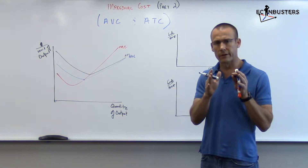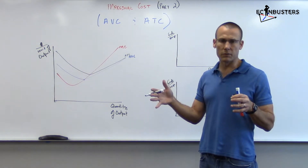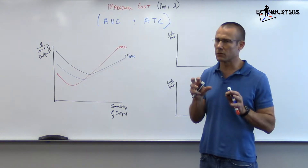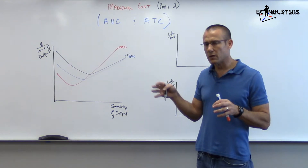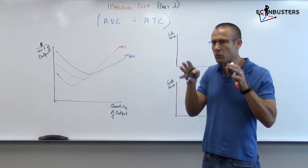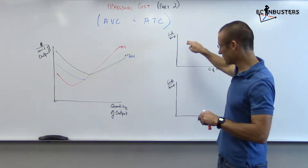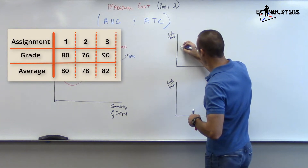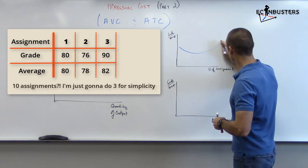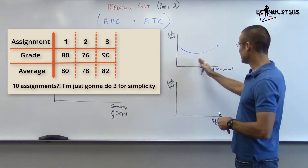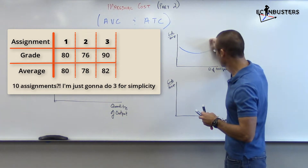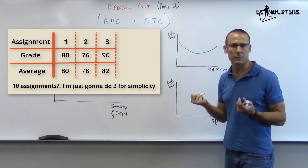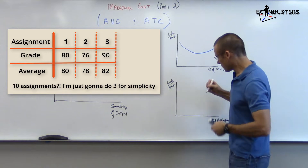I'm going to go back to what we were talking about before: your average grade and your marginal grade. We all understand average grade - you take all your grades, sum them up, divide by the number of grades. Your marginal grade is specific to each assignment you do. The grade you got on your second assignment will always be the same regardless. Let's say you had 10 assignments - I'll draw the average and the marginal on two different graphs.